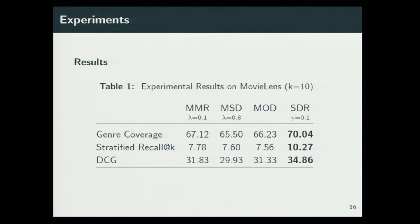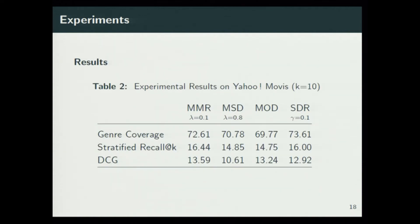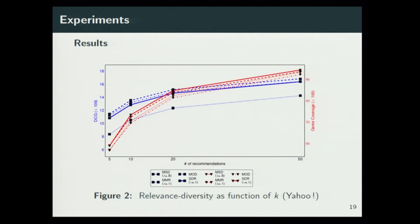Bold values indicate statistical significance. Our algorithm is the rightmost one, SDR. The column labeled 'mod' is for the modular algorithm, equivalent to item-based collaborative filtering. This is the graph for the relevance-diversity tradeoff — the bold red and blue lines correspond to our algorithm, which dominates the corresponding dotted lines. These are the results on Yahoo Movies. On Yahoo Movies, we don't see a much bigger improvement — it's only marginal, as shown in the graph where the bold lines perform about the same as the dotted lines.